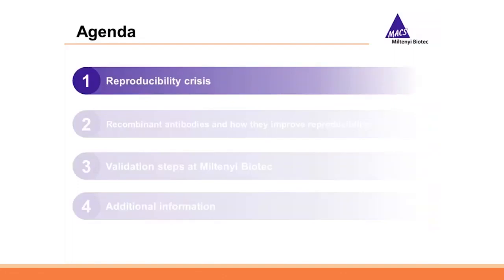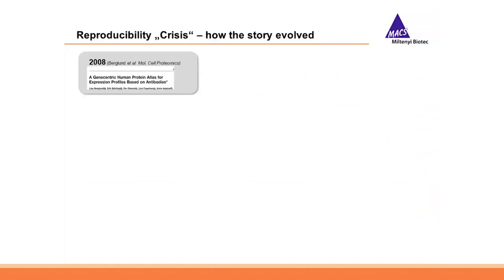So what exactly is the reproducibility crisis? In the past years there has been a growing concern in the scientific community that many published results are not reproducible by other researchers, and antibodies are considered one of the key variables that add to irreproducible results. For example, in 2008 a study by the Human Protein Atlas project found that less than 50% of commercially available antibodies recognized only their specific targets.